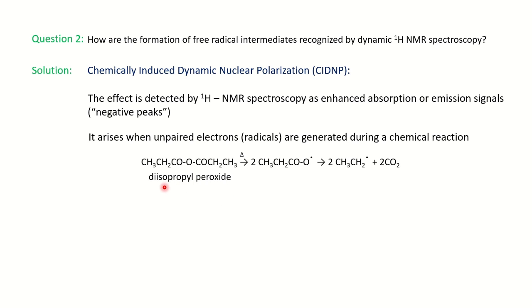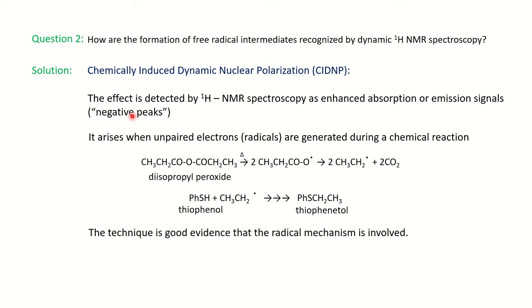It arises when unpaired electrons or radicals are generated in the chemical reaction. One example we will see: you have diisopropyl peroxide which is the initiator. Under thermal or photochemical condition, homolytic fission of the bond will take place and it will generate the free radical. Further, loss of carbon dioxide will give you a thiol radical and your molecule thiophenol will react with this highly active species and abstraction of proton will give you thiophenitone. So how we will prove the mechanism goes through with free radical intermediate - you will get the negative peaks for this. And so we can say this technique is a good evidence for the radical mechanism involved.